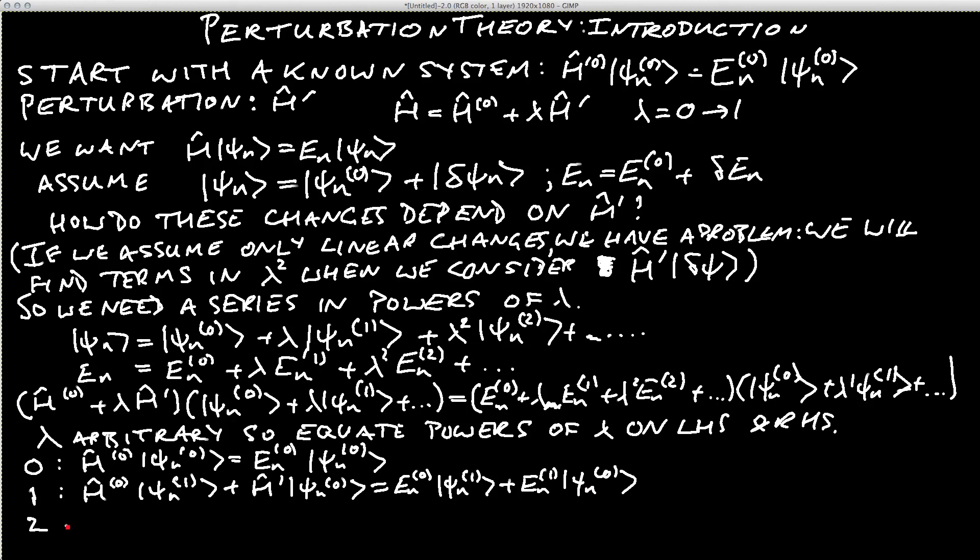Finally, for second order, which is as far as we'll go and as far as most people go because it gets particularly complicated. That equals H⁽⁰⁾ψₙ⁽²⁾ plus H'ψₙ⁽¹⁾ equals Eₙ⁽¹⁾ψₙ⁽¹⁾ plus Eₙ⁽²⁾ψₙ⁽⁰⁾.